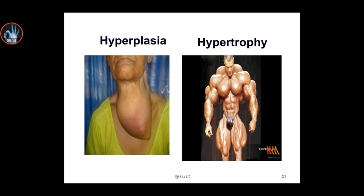We have something called hypertrophy, which means increase in the size of the cells, which leads to an increase in the size of the organ. Hypertrophy is an increase in the size of the cells — the number stays the same, say fifty, but the cells grow larger and the organ grows. But in hyperplasia, the number of cells increases — from 50 cells to 100 cells — and the organ increases in size.